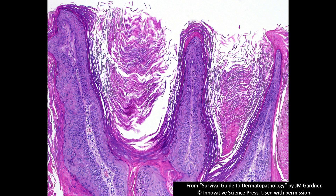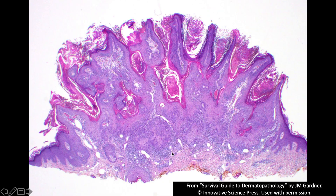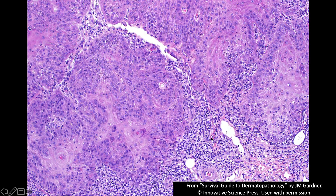That looks great for a verruca — it's got all the features: parakeratosis on top, papillomatosis with finger-like projections, and some hypergranulosis. But when we look at lower power, the top looks like a wart, but what's going on down here? That looks pretty atypical to me. So I would say that this is squamous cell carcinoma.